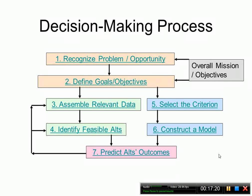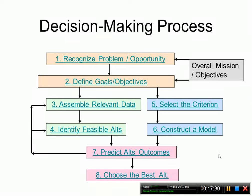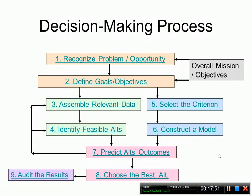We may need to go back and collect more data or identify different alternatives if one proves infeasible. When the iterative process is complete and we have outcomes for all alternatives, we choose the best alternative based on the criterion. As we go, we audit the results to see whether the chosen alternative performs as expected. If it's not performing, there may be a new problem or opportunity, which sends us back to step one.